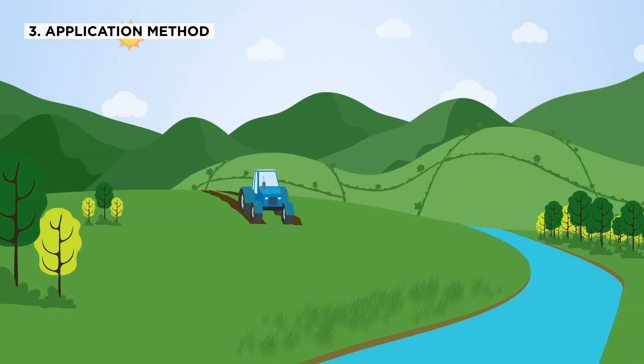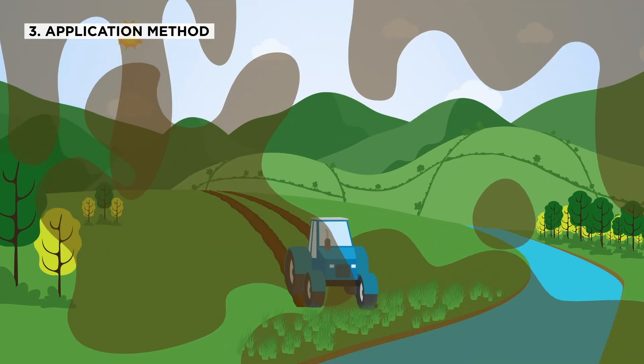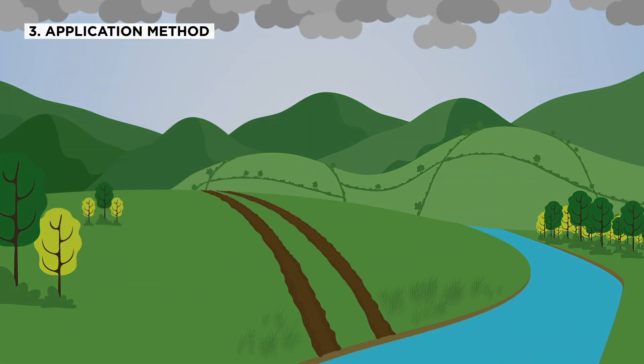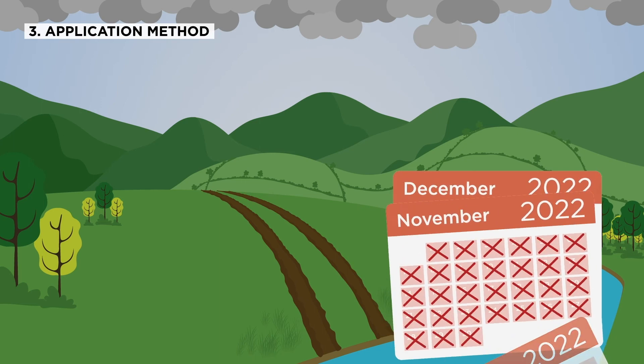This problem can be magnified if heavy machinery is operated on saturated soils, so such activity should be avoided, particularly during the worst weather of a farm's closed period between October and January.